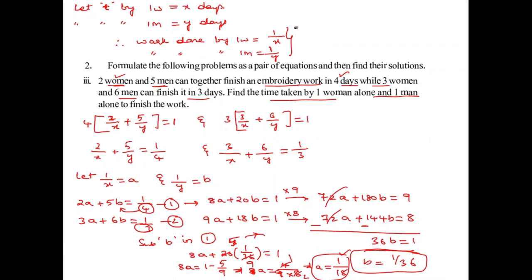Substituting back: 1 by x equals A equals 1 by 18, so x equals 18 days — the time for 1 woman alone. And 1 by y equals B equals 1 by 36, so y equals 36 days — the time for 1 man alone.